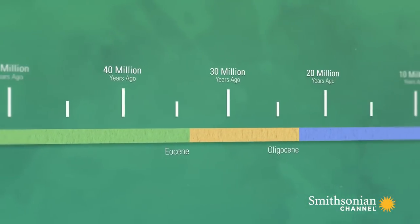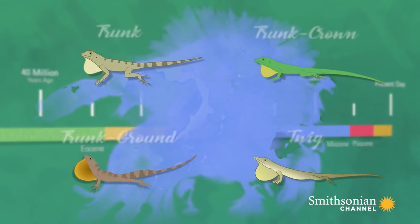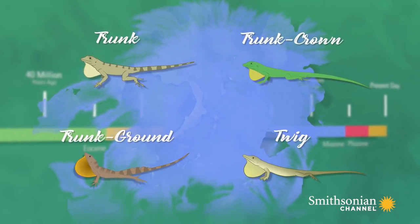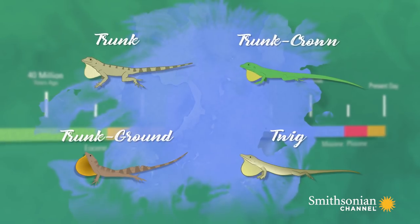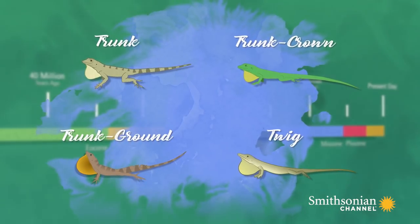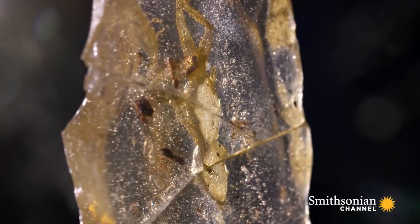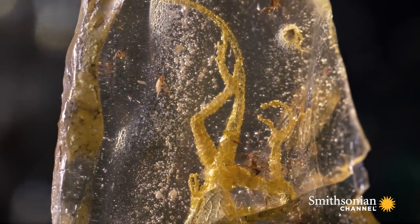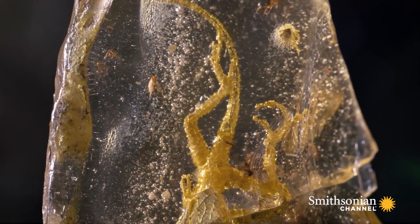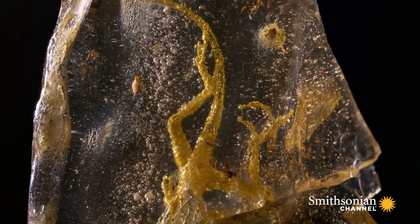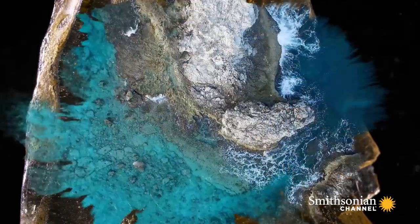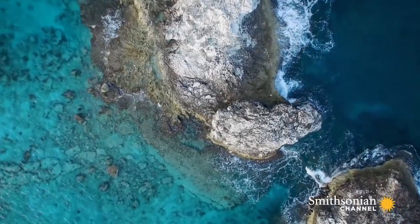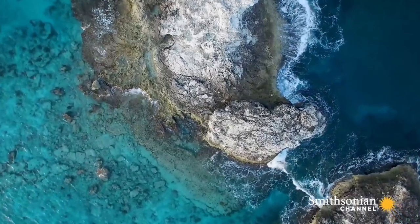We have at least four different ecomorphs from that period, maybe 15 to 20 million years ago. It's amazing to look at these amber specimens and to realize that 20 million years ago, the ecomorphs had already originated. Unfortunately, fossils of Caribbean anoles are incredibly rare.